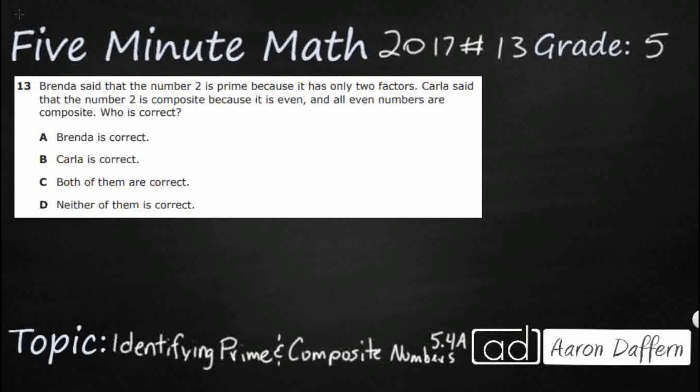So, Brenda says that the number 2 is prime because it only has two factors. Carla said that the number 2 is composite because it is even and all even numbers are composite. Who is correct?